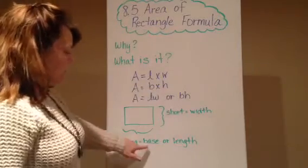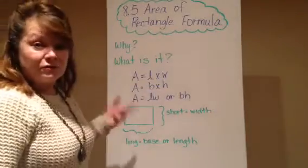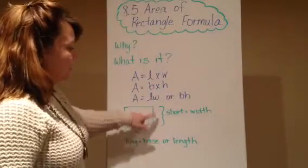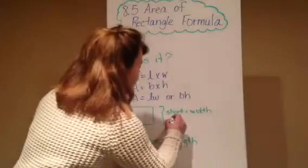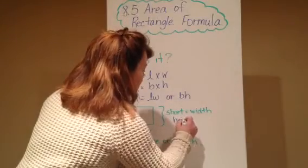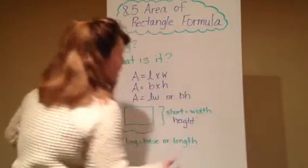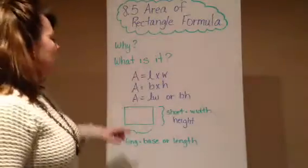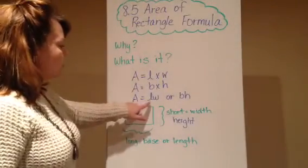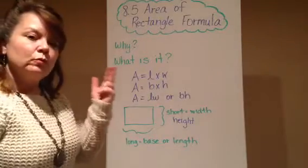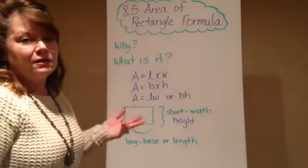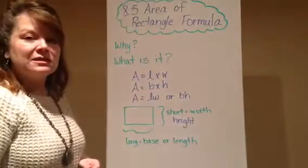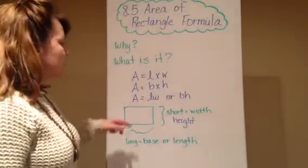Another way is A equals b times h, where the b stands for the base, which is also the long side, and the h stands for the height. And then we can even shorten it even more by saying A equals lw, and anytime we have two letters placed together like that, that basically means we multiply them. Or we could write A equals bh.